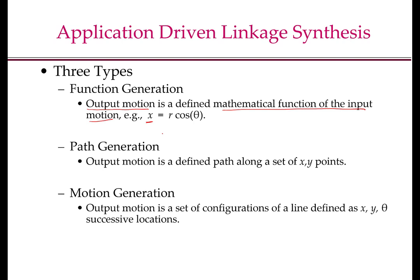For example, the output x can be a simple harmonic function of the input angle theta. In a path generation problem, the output motion is a defined path given by a set of x, y coordinates — a set of discrete coordinates that will be defined and asked to follow this path. In motion generation, we will have x, y, as well as theta. If we think of a reference frame on the coupler, the origin of the reference frame and the angle theta are all important. So we will have sequences of xi, yi, theta_i that will be given to us, which will be sequences of reference frames.